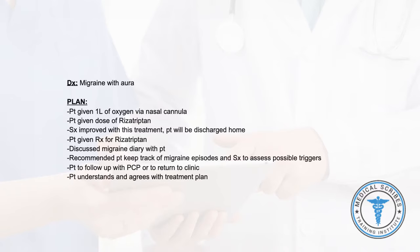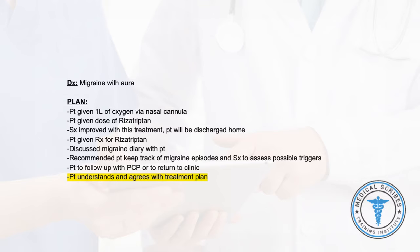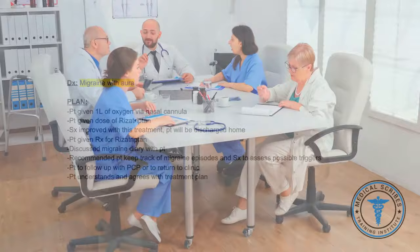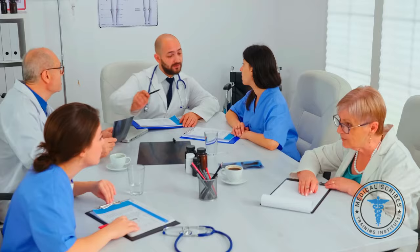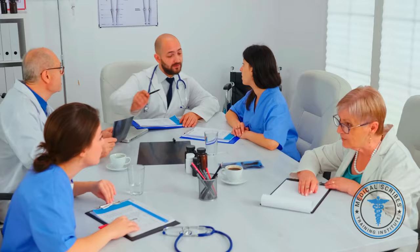In the plan section, note that the provider administered oxygen and a new medication in the clinic, which improved her symptoms, allowing discharge home with a prescription for rizatriptan. The provider asked the patient to keep a migraine journal and suggested follow-up with her PCP. Document that the patient understands and agrees with the treatment plan. This chart is complete with the final diagnosis of migraine with aura. Remember that visit notes vary between EHR systems, specialties, and providers. We hope this exercise has been beneficial in helping you learn the important elements to document and where they should be recorded.